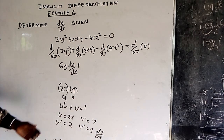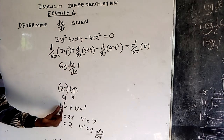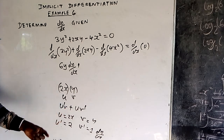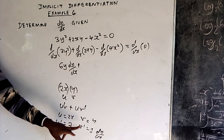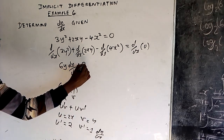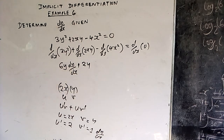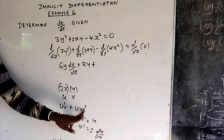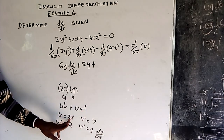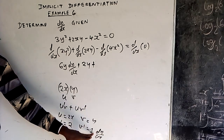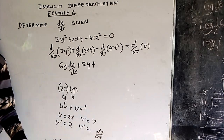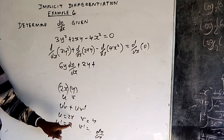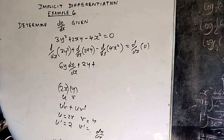So you collect the results. What you want is u' times v plus u times v'. What is u'? It's 2. What is v? It's y. So the first term is 2y. Then plus uv': u is 2x and v' is dy/dx, giving you 2x dy/dx.